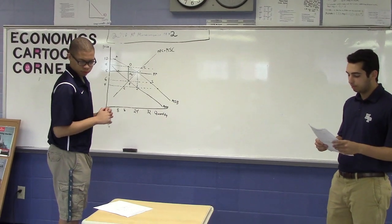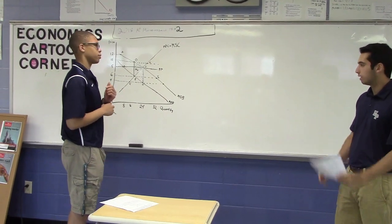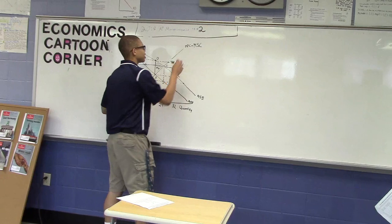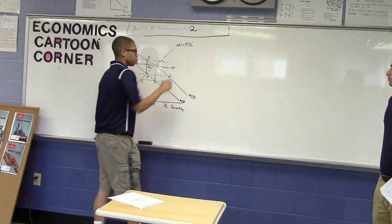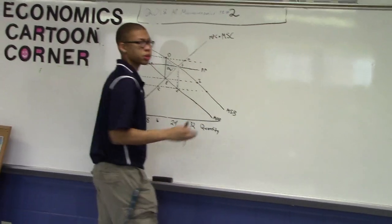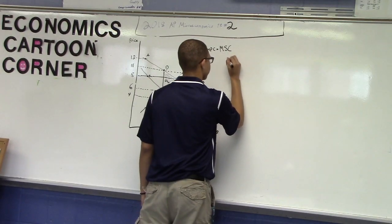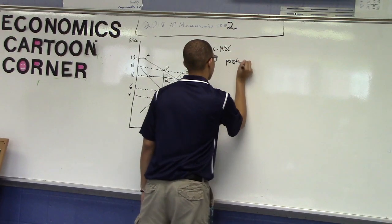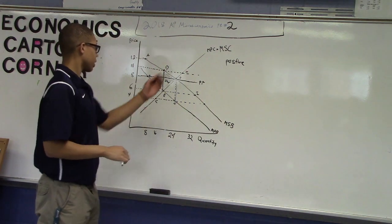Part A: Identify the type of market failure illustrated by the graph and explain it. As you can see here, MPC and MSC are equal, and MPB and MSB are not equal, which shows that this graph is a positive externality.